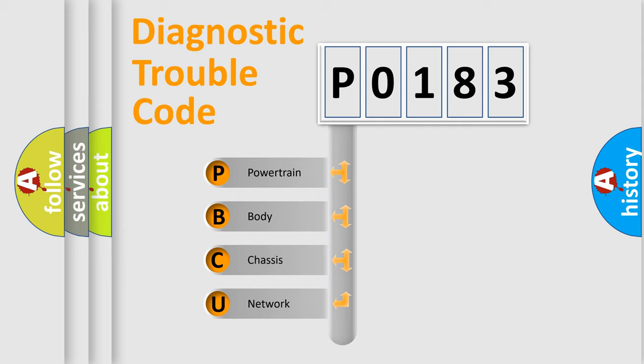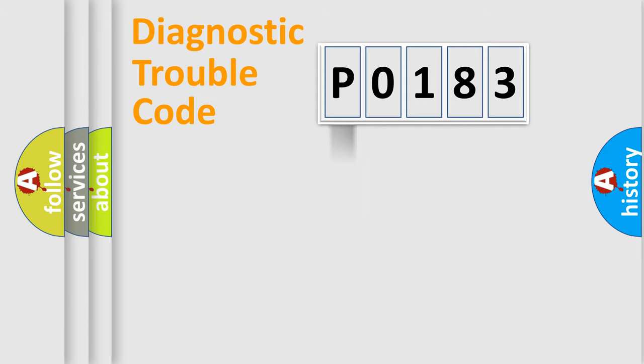We divide the electric system of automobile into four basic units: Powertrain, Body, Chassis, and Network. This distribution is defined in the first character code.